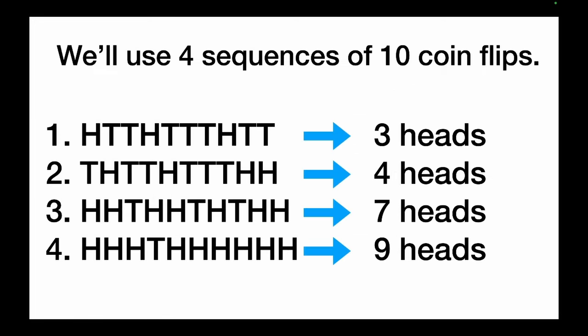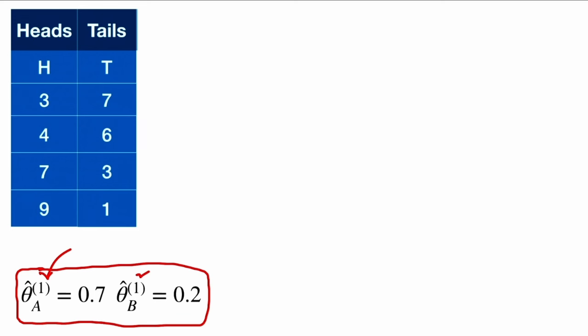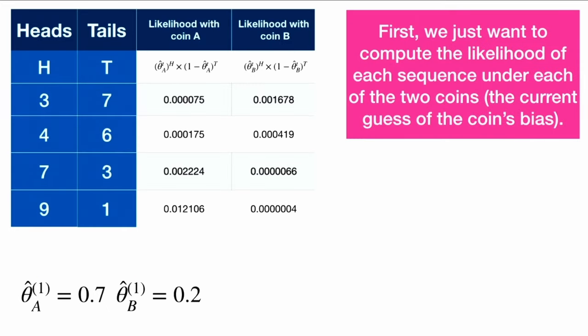We use four sequences of ten coin flips: three heads in sequence one, four heads in sequence two, seven heads in sequence three, and nine heads in sequence four. We start with a random guess of theta_hat_A and theta_hat_B — these are our first guesses, indicated by the superscript one. The first thing we do is compute the likelihood of each sequence under each coin, using the binomial formula.